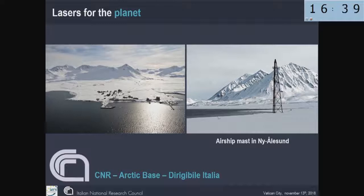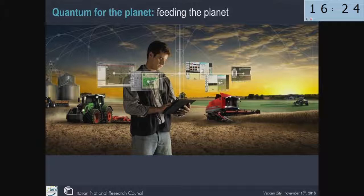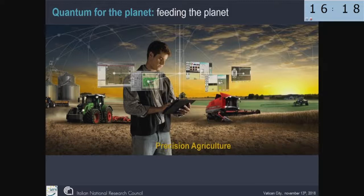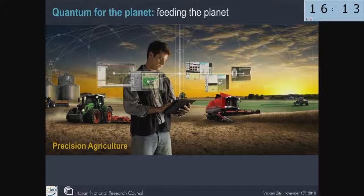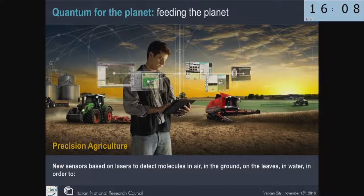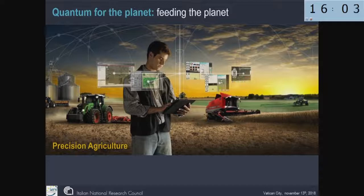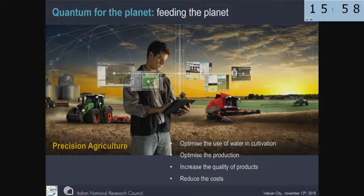This is of fundamental importance. All our science is now investigating the climate changes. Here you see the scientific base in the Svalbard Islands, where there is also a contribution named Dirigibili Italia, after the airship by which Nobile crossed the North Pole. But quantum for the planet means also feeding the planet. Essentially, lasers or in general quantum physics are important for precision agriculture, to detect molecules on leaves, on grounds, in water. There is a long list of experiments where you can optimize the use of water in cultivation, increase the production, increase the quality of products, reduce the cost.